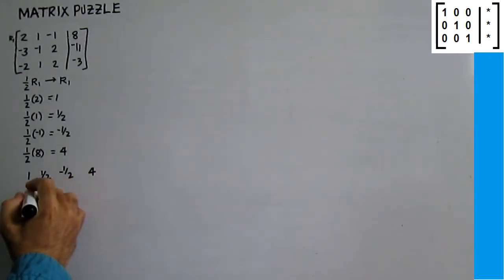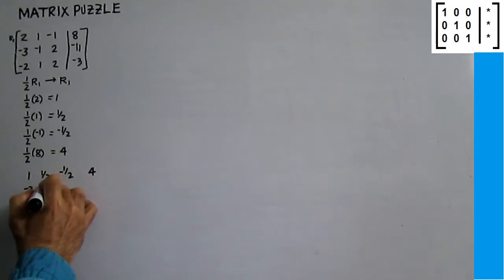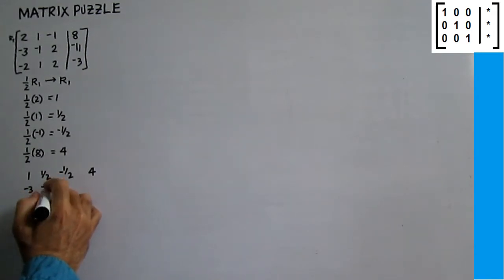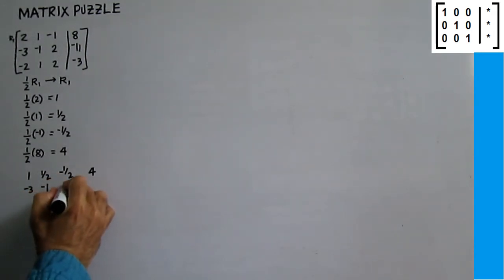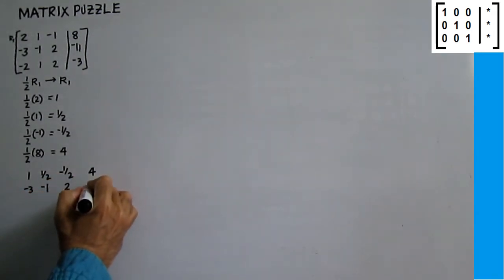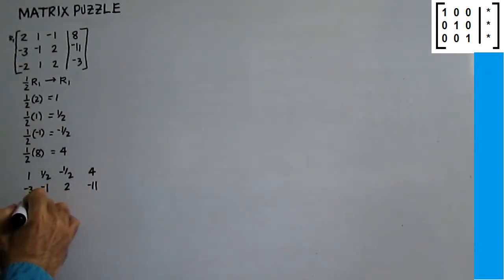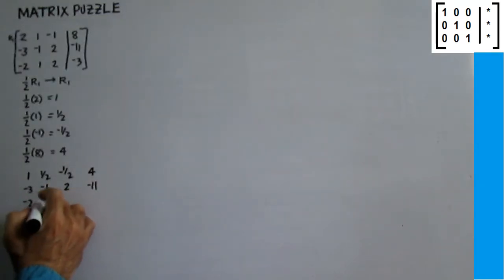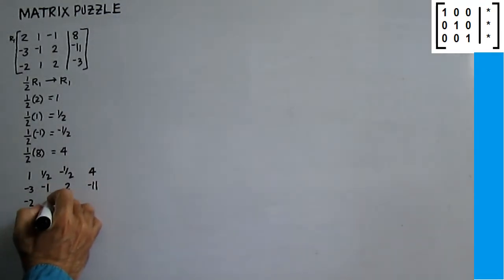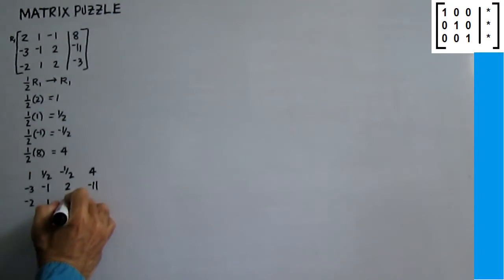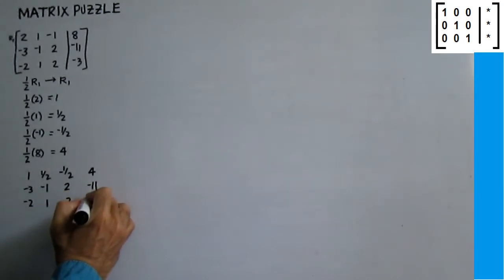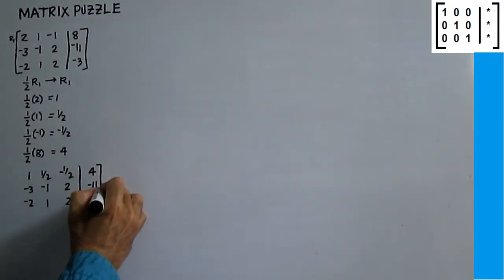New row 1 is: 1, 1 half, negative 1 half, 4. Copy row 2: negative 3, negative 1, 2, negative 11. And row 3: negative 2, 1, 2, negative 3.